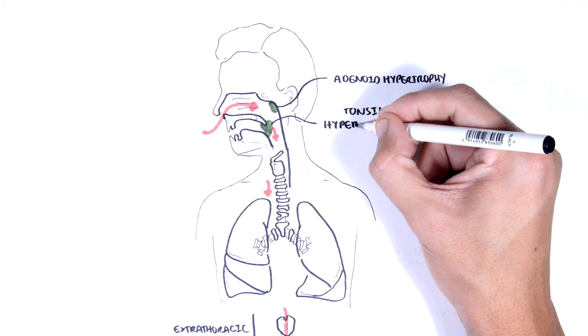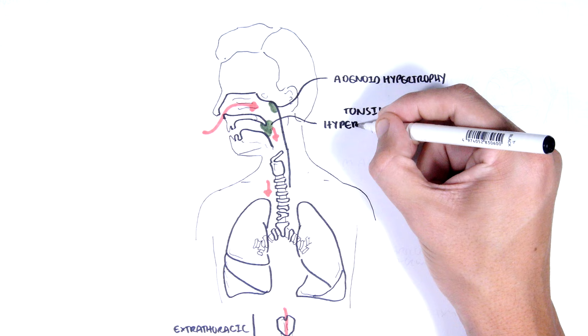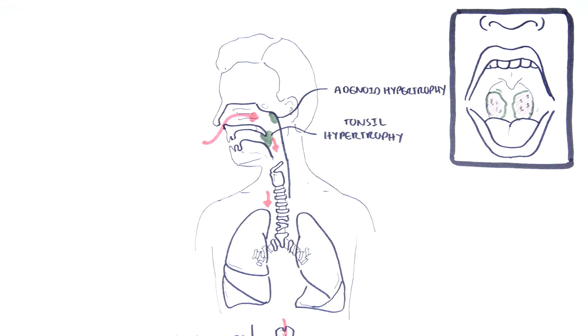The tonsils are also lymphoid tissues that are commonly enlarged during viral and bacterial infections. Tonsillar hypertrophy due to inflammation is common in infections such as infectious mononucleosis caused by Epstein-Barr virus. But also important to keep in mind other causes of enlarged tonsils, such as malignancy or complications of tonsillitis, such as peritonsillar abscess. This is much more common in adults.